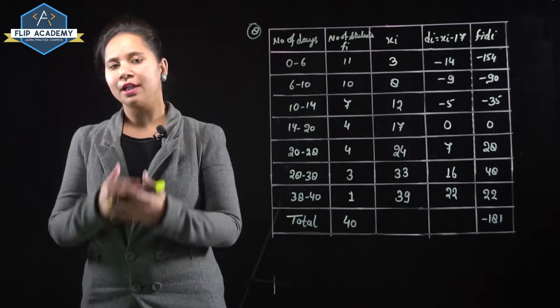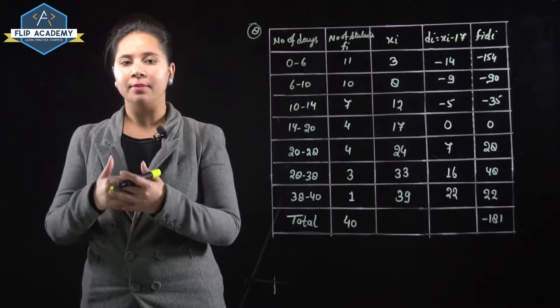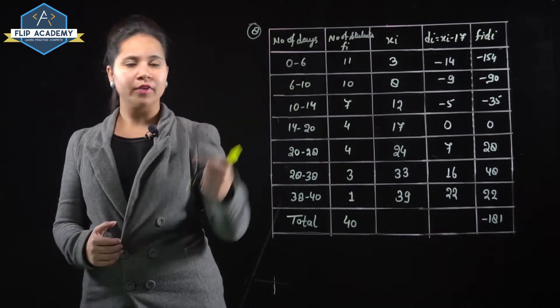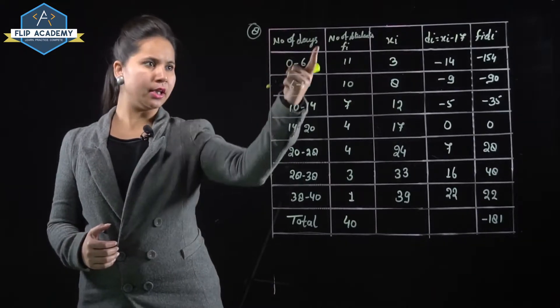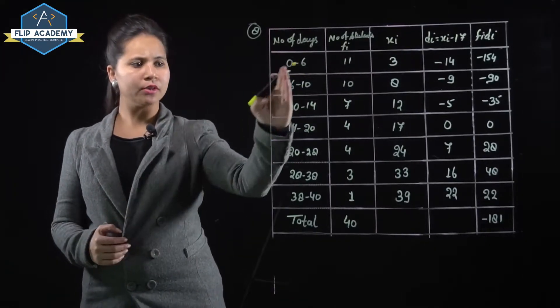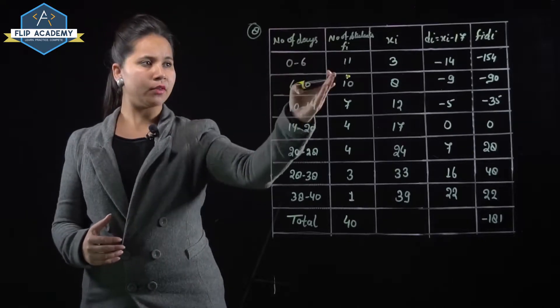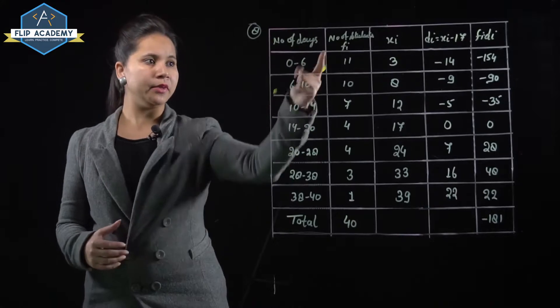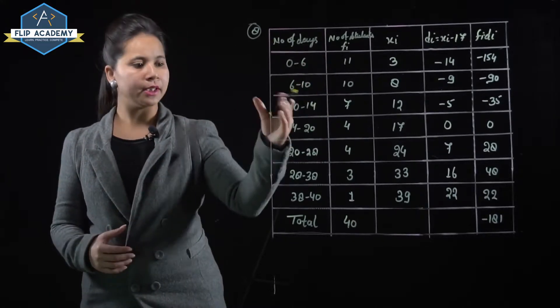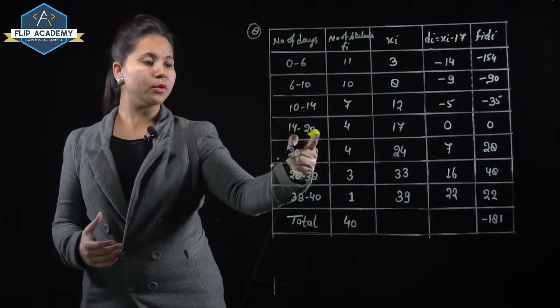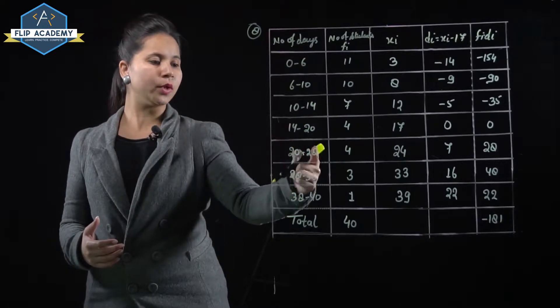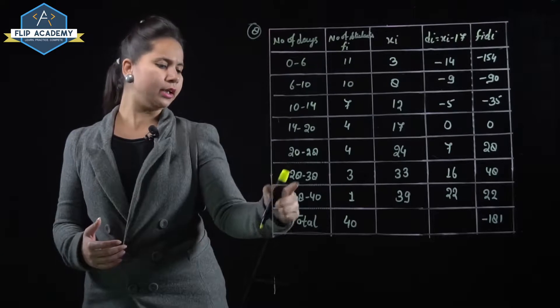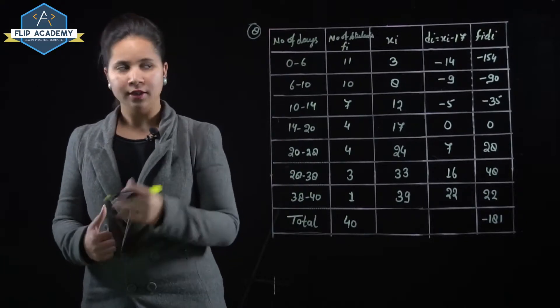According to the question, the class teacher has provided the absentee record of 40 students for one term. Number of days 0 to 6 has 11 students, between 6 to 10 days there are 10 absent students. Similarly, 10 to 14 days has 7 students, 14 to 20 has 4, 20 to 28 has 4, 28 to 38 has 3, and 38 to 40 has 1.